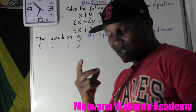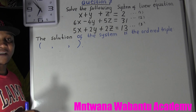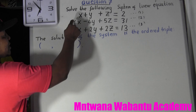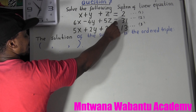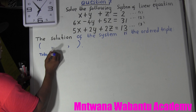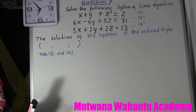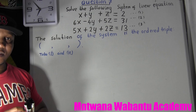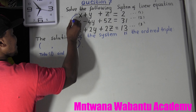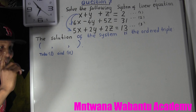To solve this, I have to eliminate one letter. So what you do is take two equations and eliminate one letter. Take equation one with equation two, and then take equation one with equation three, and get rid of one letter each time.